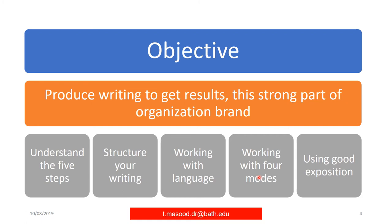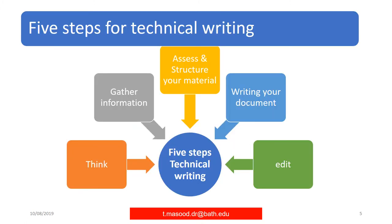Fourth is working with the four writing modes, and last but not least, using good expositions of your objective. I will now talk about the five steps for technical writing. Step one: thinking. Step two: gathering information — what you have planned, which could be in different forms. Step three: assess and structure your material. Step four: writing your document — what you need and what you are looking for. And step five: edit and finalize.